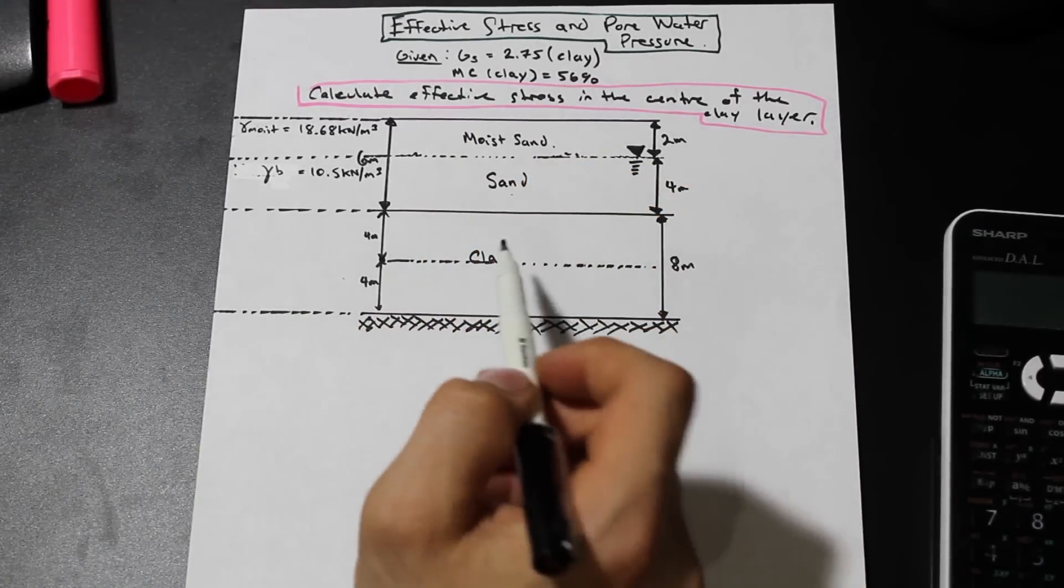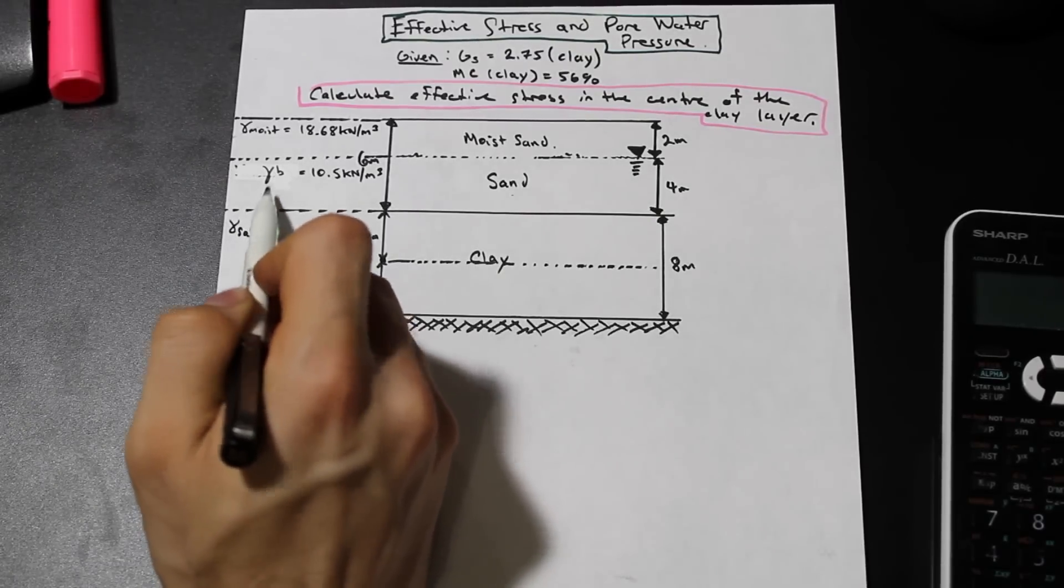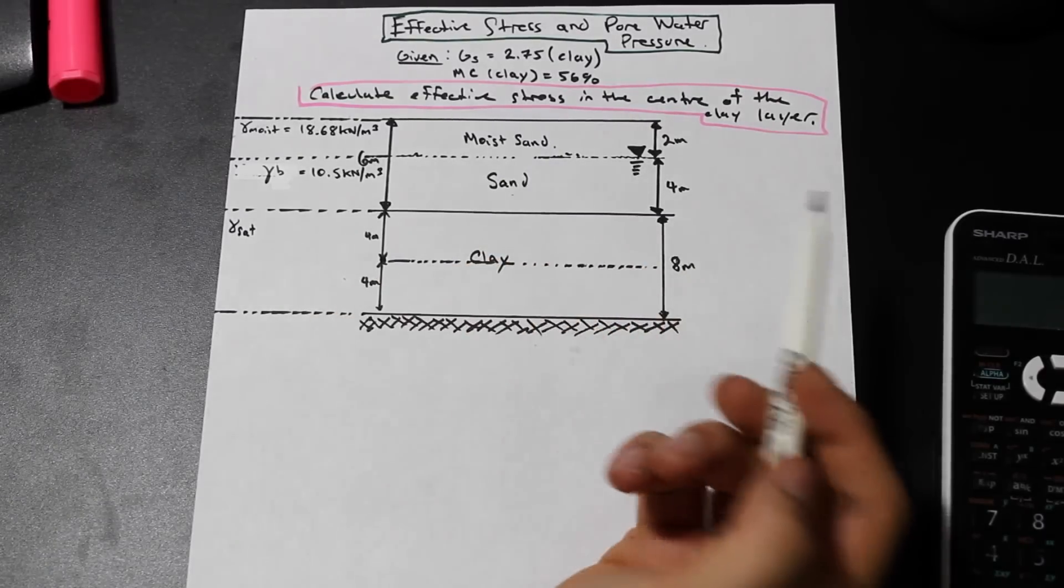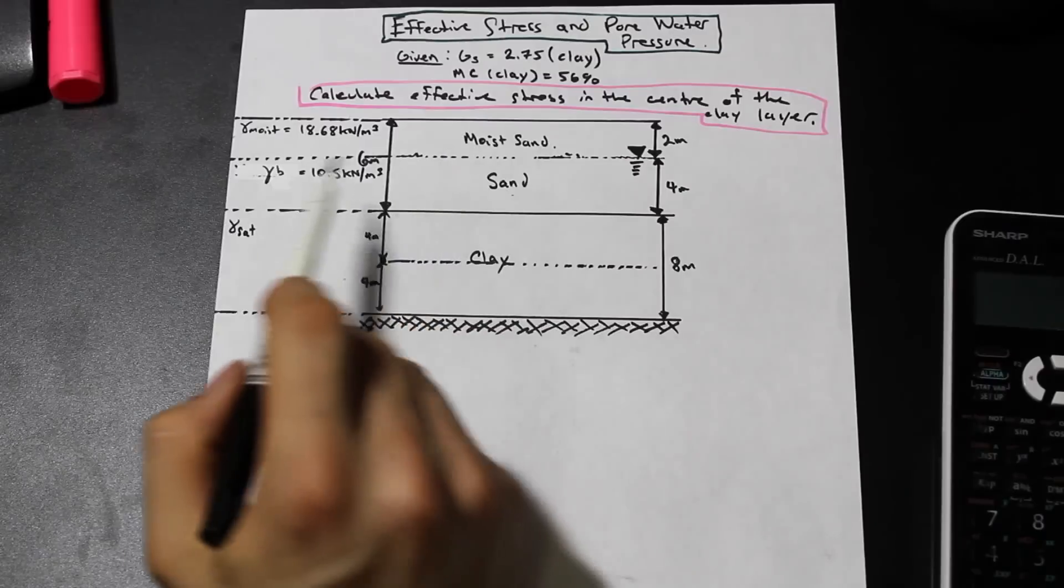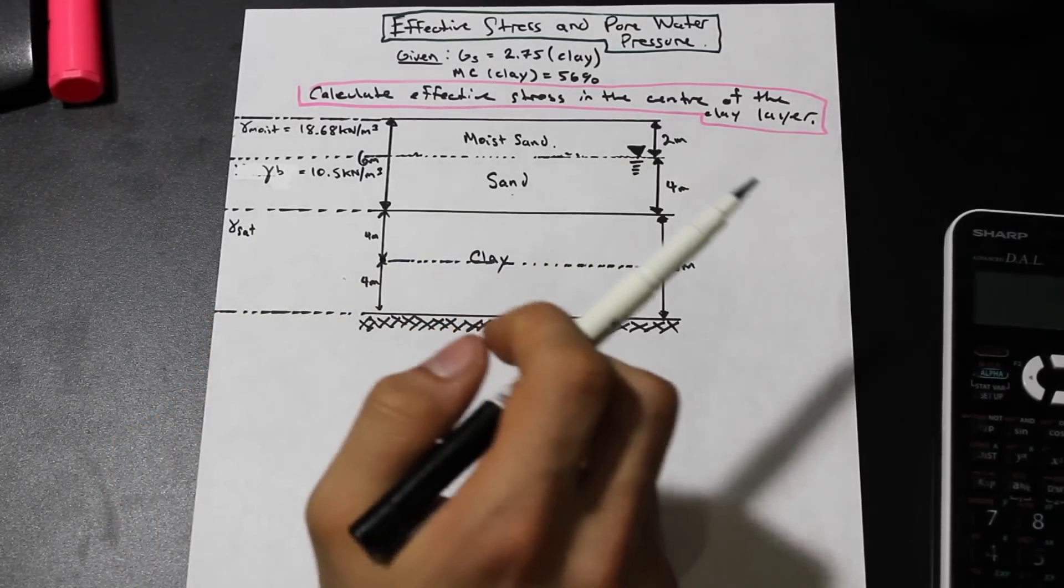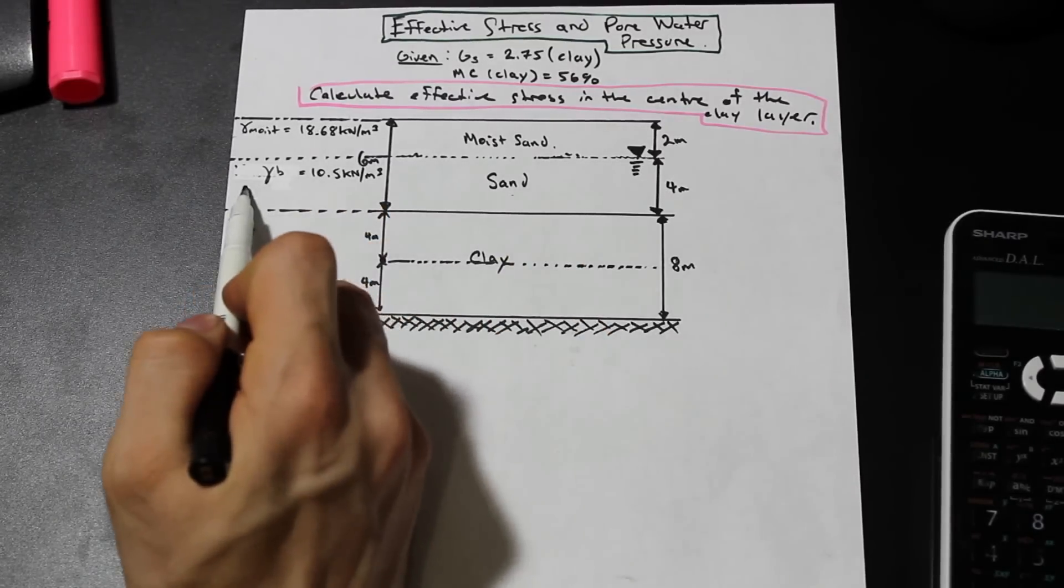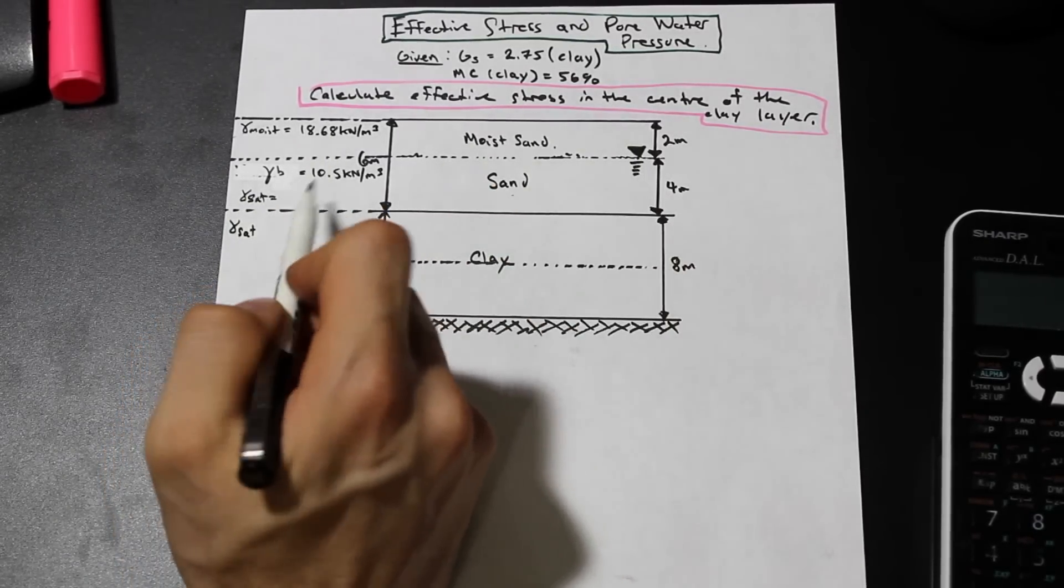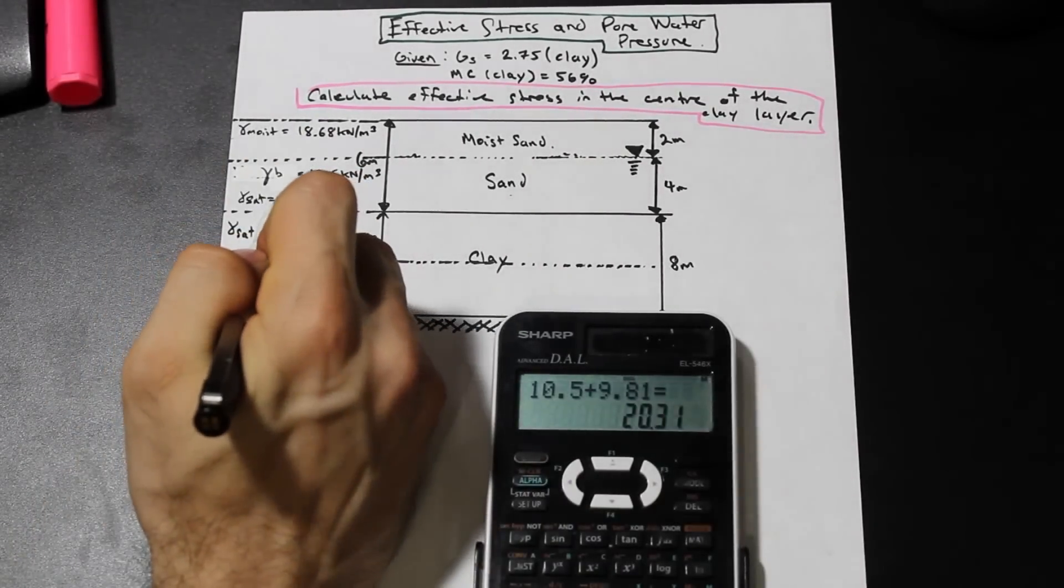And we're going to need to calculate gamma saturated for both the sand, because everything below the water table here is obviously saturated because this is the water table. So we're going to need to find gamma saturated for this. We're going to need to find gamma saturated for the clay. So let's go ahead, and gamma saturated for the sand is easy. We'll start with that. We're just going to add 9.81, or gamma water. So we have 20.31 for the gamma saturated.